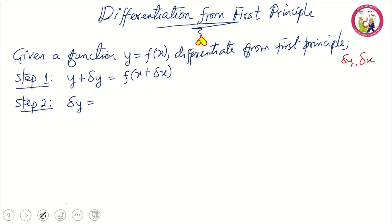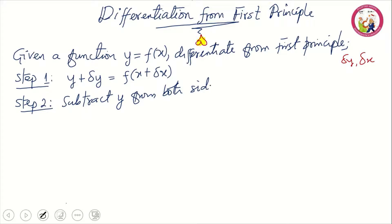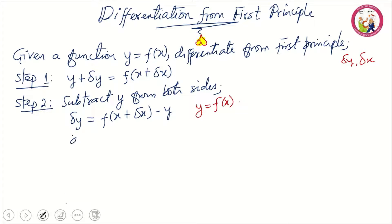Step two is to subtract y from both sides. That gives us delta y equal to f of x plus delta x minus y. Don't forget that y is equal to f of x from the beginning, so when you substitute, we have delta y equal to f of x plus delta x minus f of x. Then you perform some further simplification.